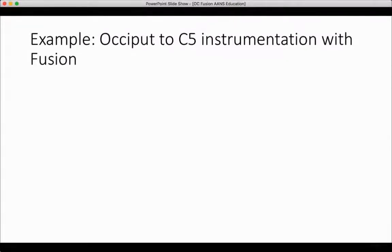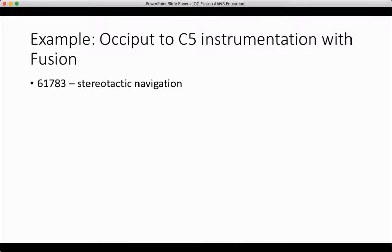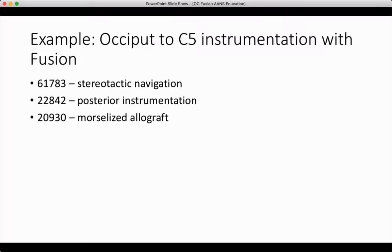For example, if we take the case of an occiput to C5 instrumentation with fusion and the use of stereotactic navigation, codes would include 61783 for stereotactic navigation, 22842 for posterior instrumentation, 20930 for the usage of morselized allograft, and 20936 for local morselized autograft.